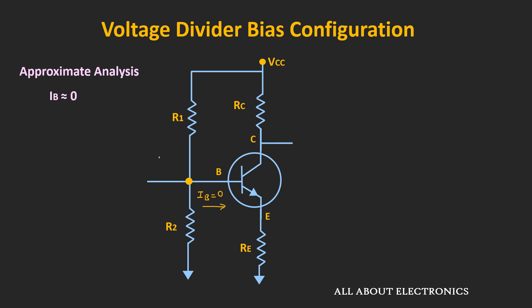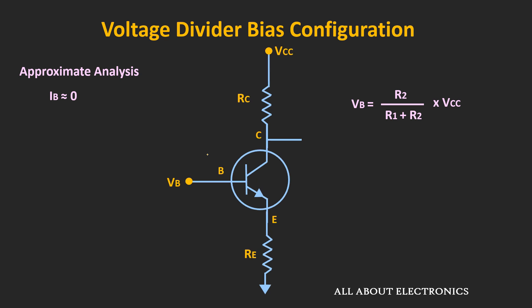In that case, almost the entire current will flow through these two resistors, particularly through this branch. By applying the voltage divider rule, we can find the voltage at this particular node. So, assuming Ib is equal to zero, if we see the equivalent circuit, then it will look like this. Of course, there will be a Thevenin's equivalent resistance because of this voltage divider circuit. But as we are assuming Ib is equal to zero, it won't make any difference. We will see in detail about it once we finish this approximate analysis.